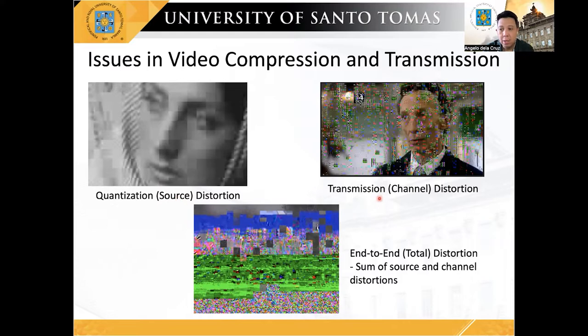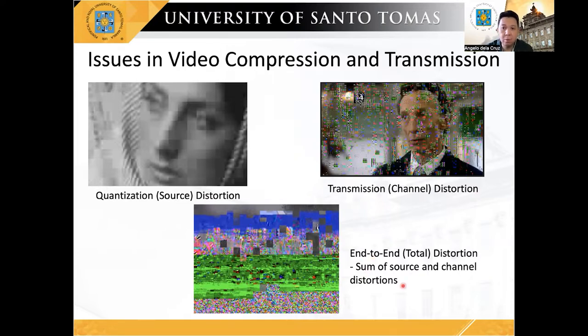On the other hand, the transmission distortion is mainly caused by channel impairments. And finally, the end-to-end distortion is the sum of the two previously mentioned uncorrelated distortions.